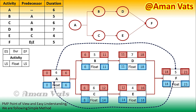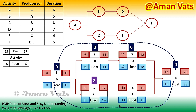We've completed both forward and backward pass calculations. Looking at the values: 0 minus 0 equals 0, 6 minus 6 equals 0, 11 minus 11 equals 0 — the float is zero along this path. The formula for float is late start minus early start, or late finish minus early finish. On the other path, 8 minus 6 equals 2, 14 minus 12 equals 2, 18 minus 16 equals 2 — so those activities have a float of two days.